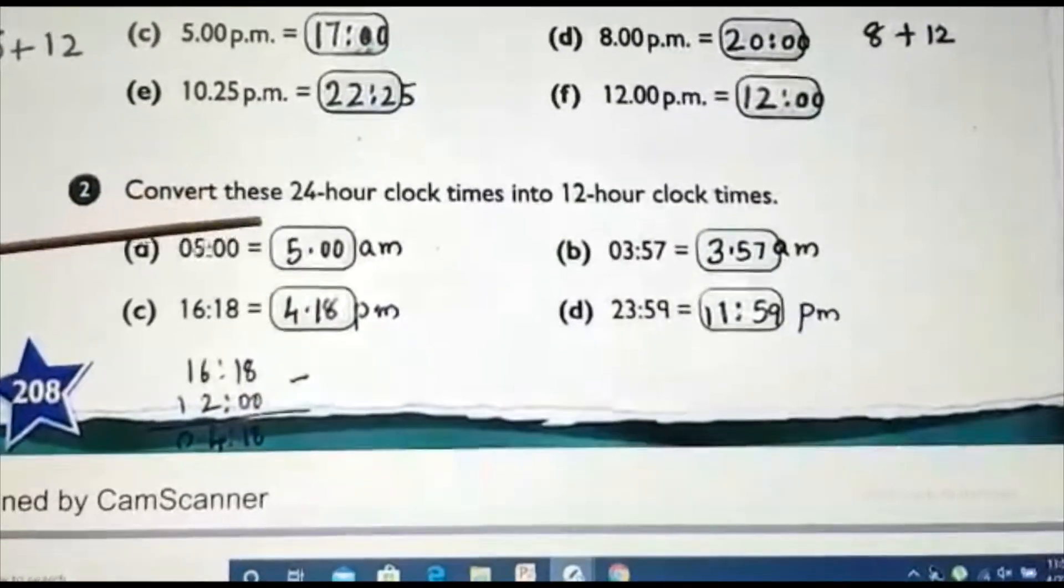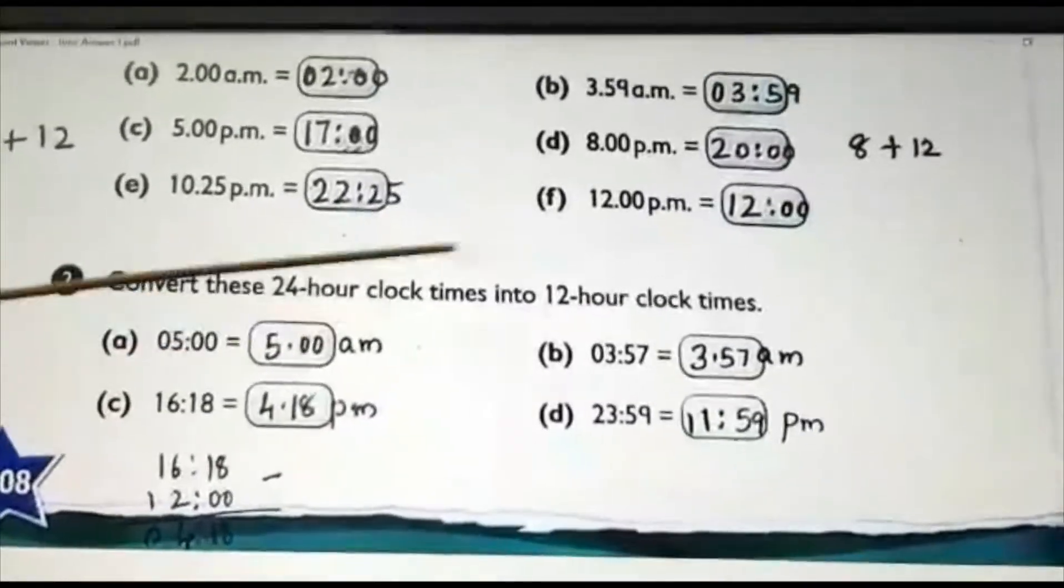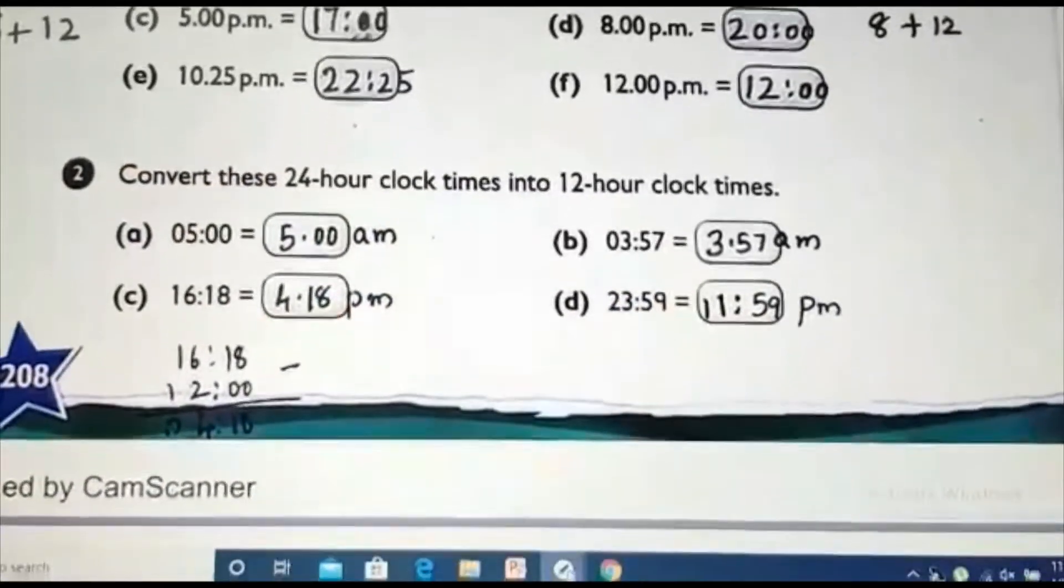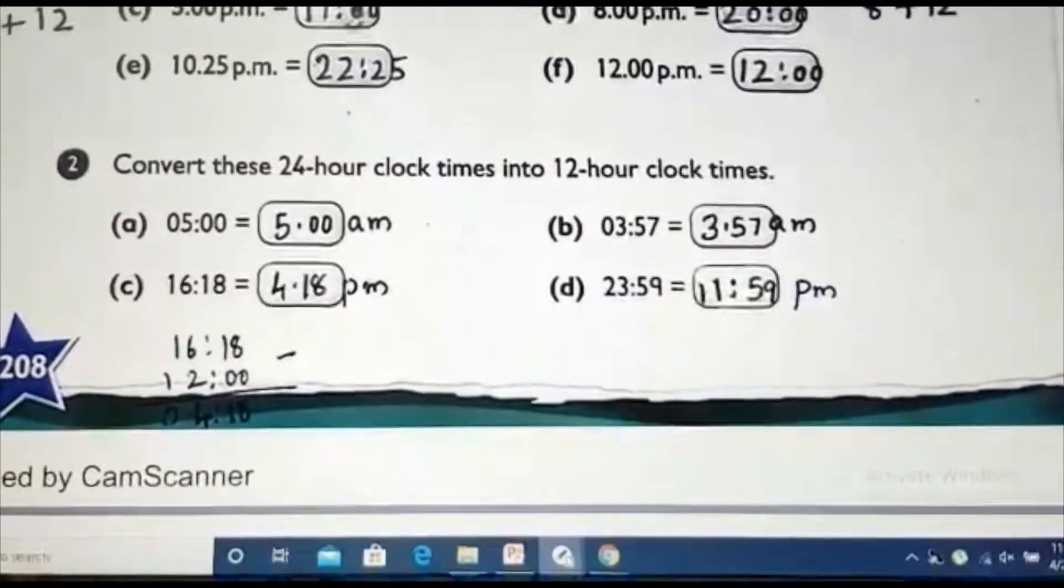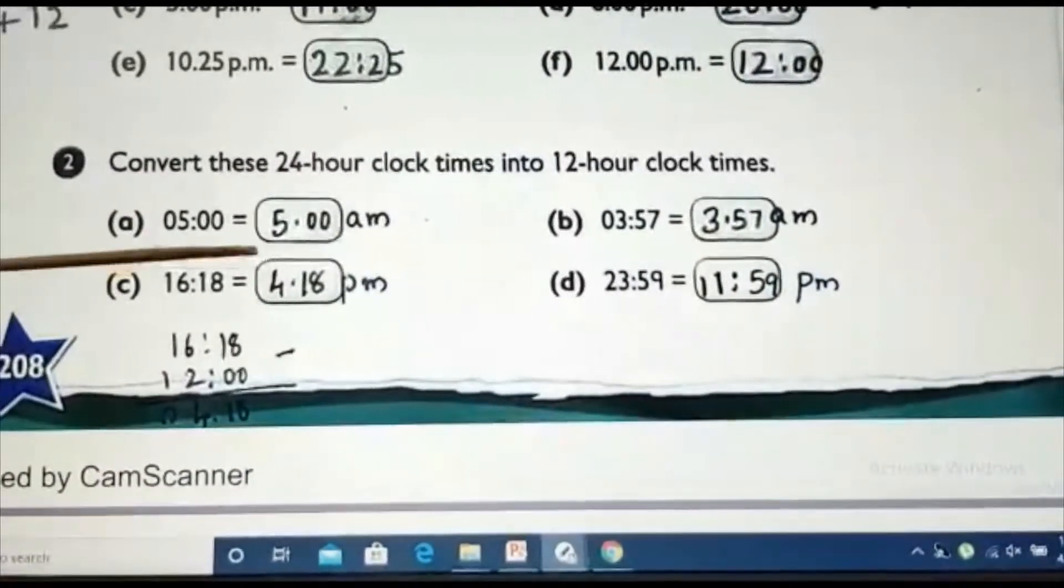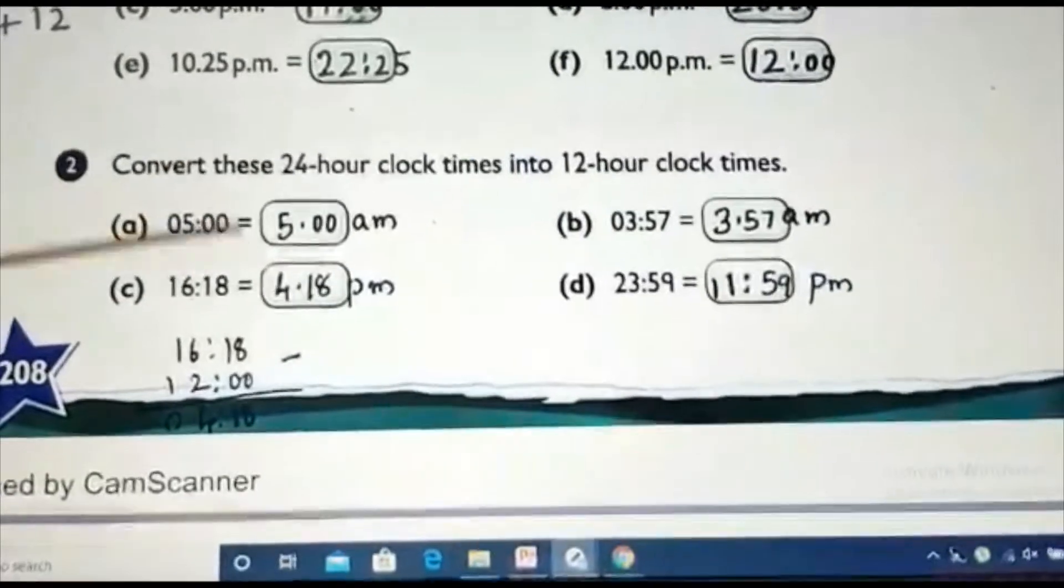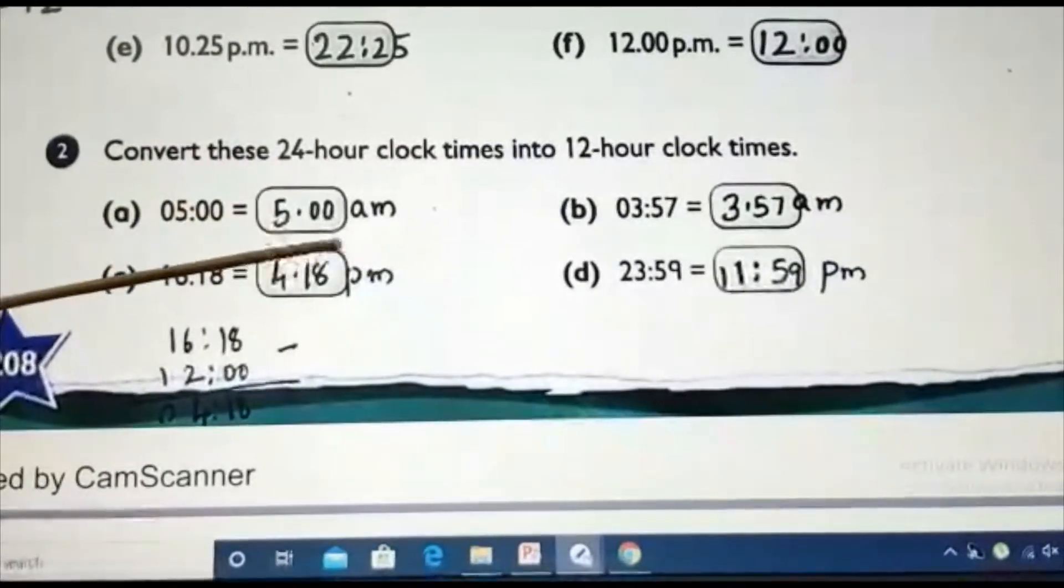Again, coming to the 12 hour clock. 24 hours to 12 hour. However, we know answer there will be AM and PM. Why? Because we are writing in 12 hour clock. So, AM and PM should be there. So, 5:00. No change. 5 means up to 12. It is same. So, we will write 5 AM itself.